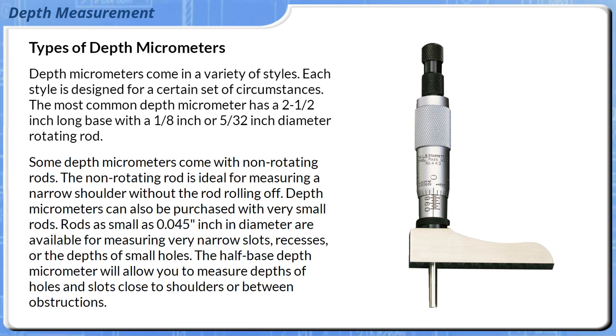Some depth micrometers come with non-rotating rods. The non-rotating rod is ideal for measuring a narrow shoulder without the rod rolling off. Depth micrometers can also be purchased with very small rods.